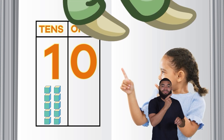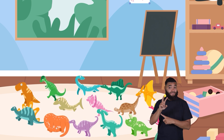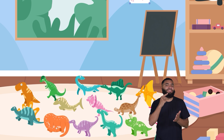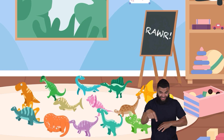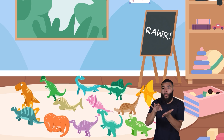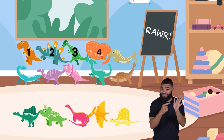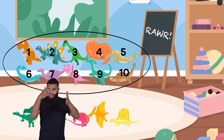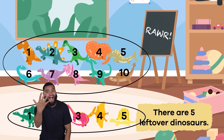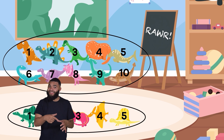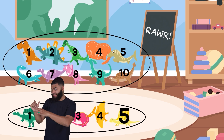To make this more fun, let's practice place value using some fun objects, starting with dinosaurs. Here is a group of dinosaurs. One of the easiest ways to count them is to organize them into groups of ten, like so. How many dinos are left? That's right! There are five leftover dinosaurs. We have one group of ten with five left over.